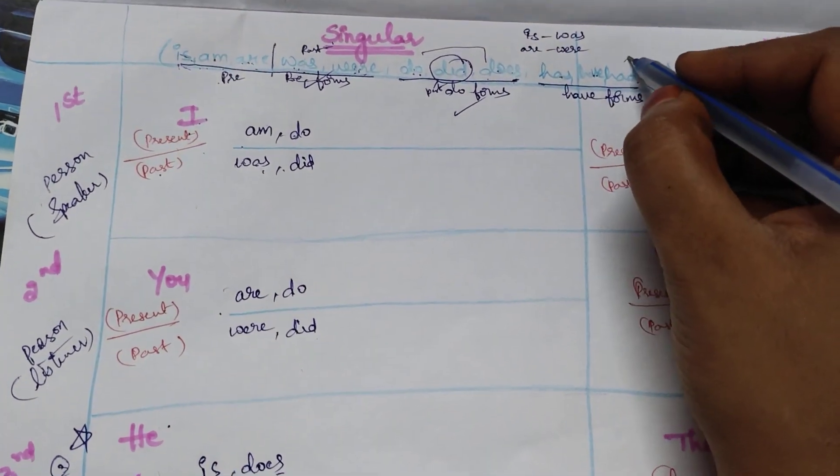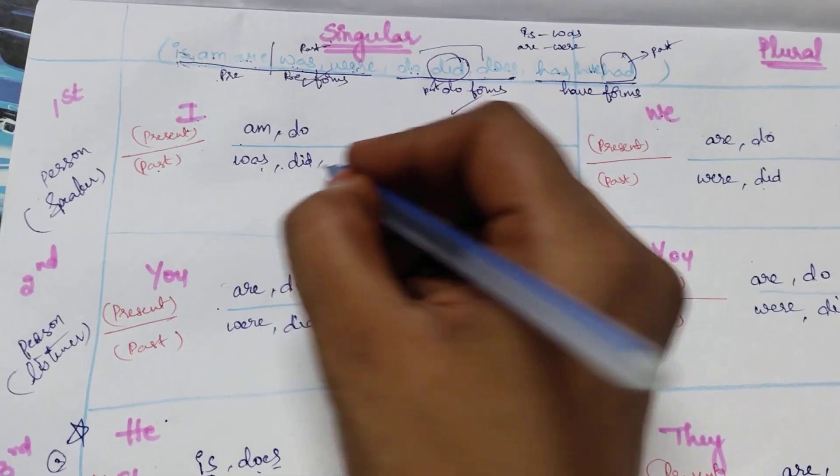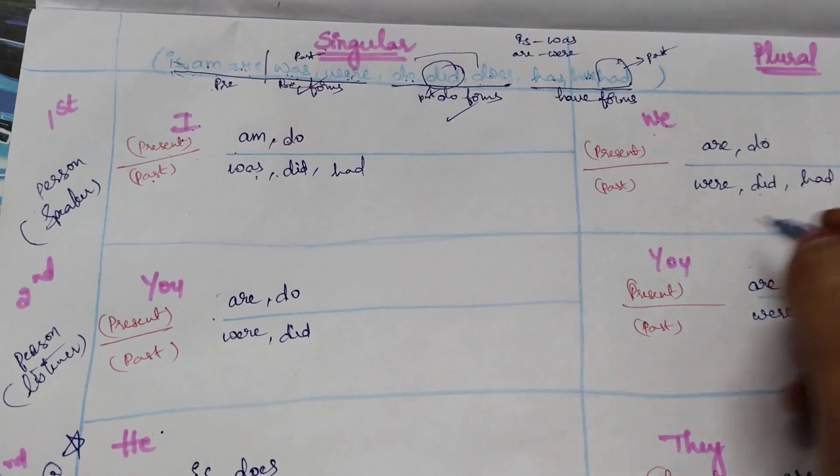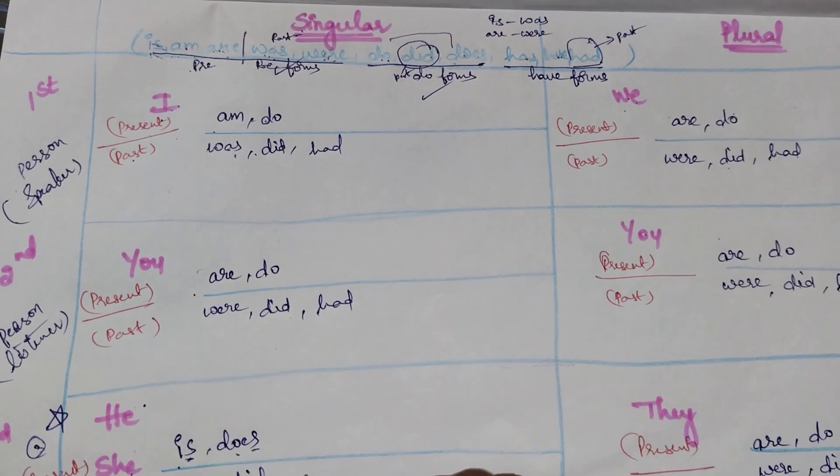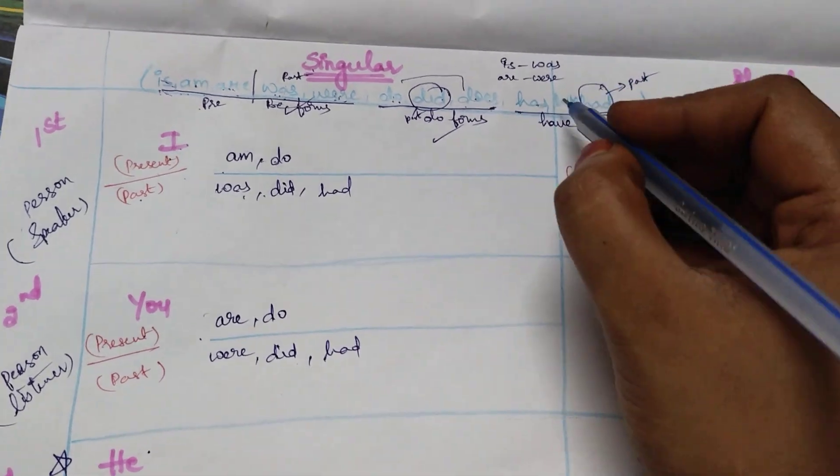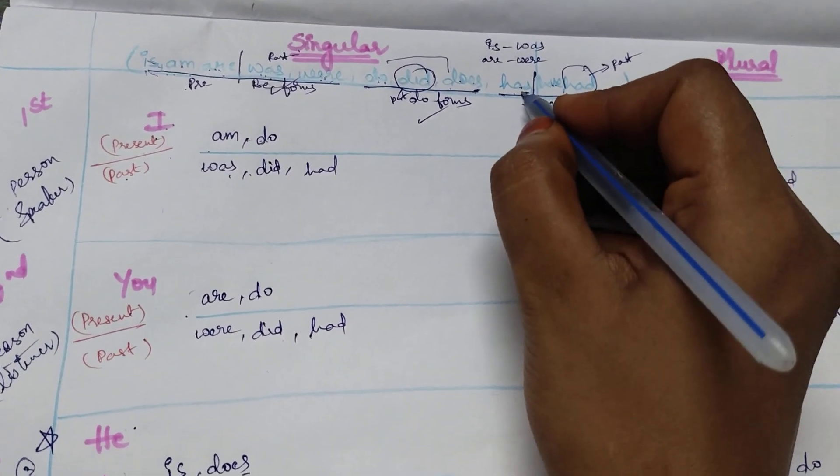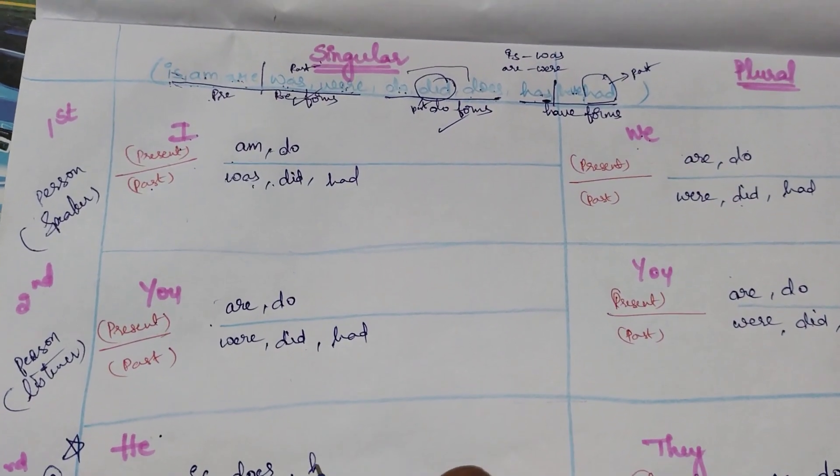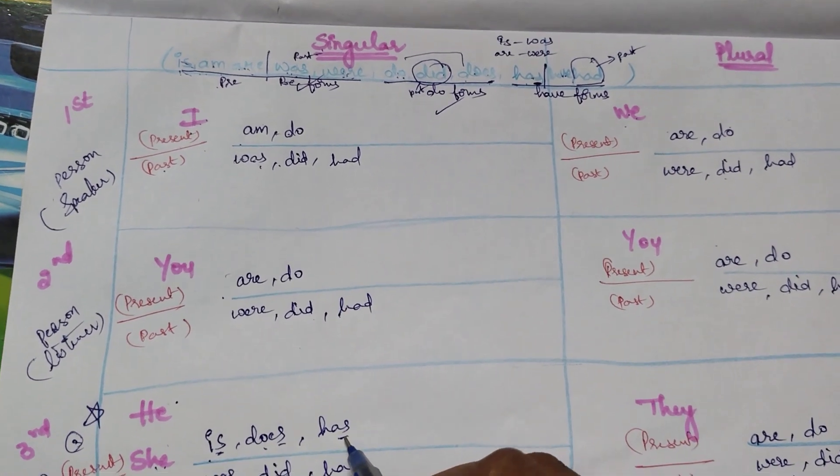Same thing with have. Had is reserved for past. Again, question paper leaked. So had. Right, in past case, all had. Now we are left with either has or have. Again I told you that he, she, it will be ending with has and yes ending letter. So yes, that is has.